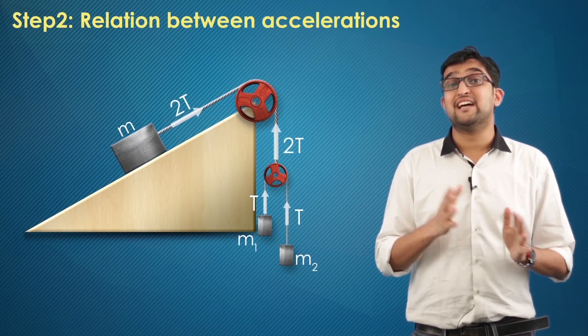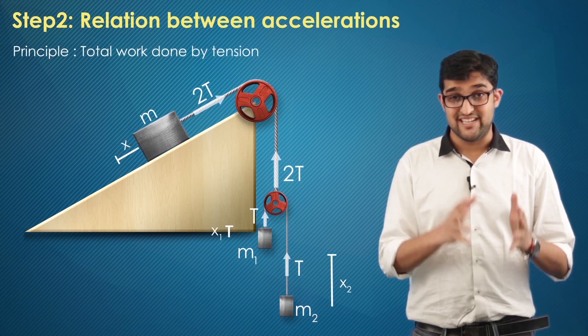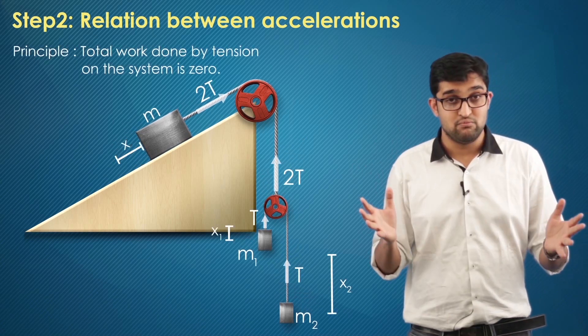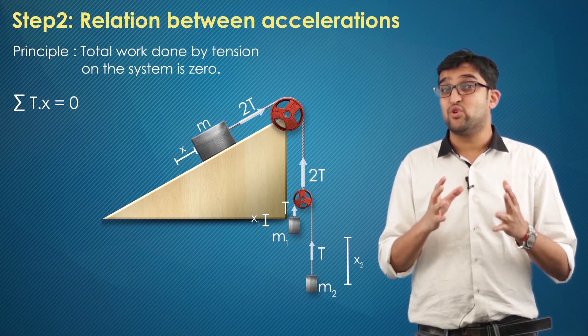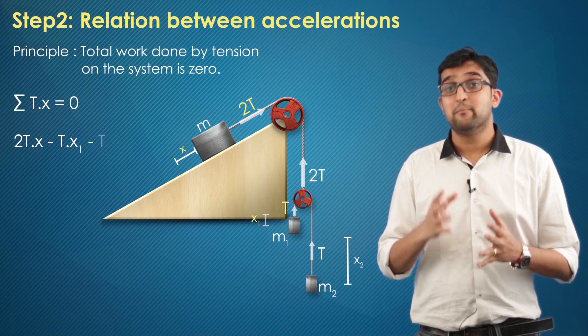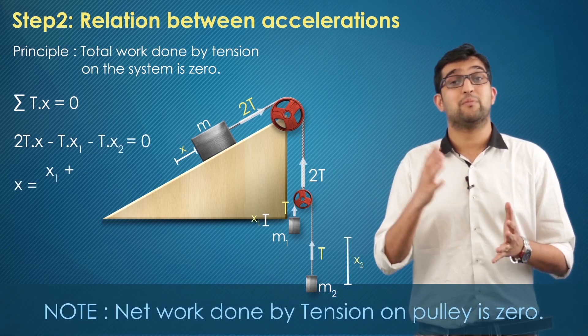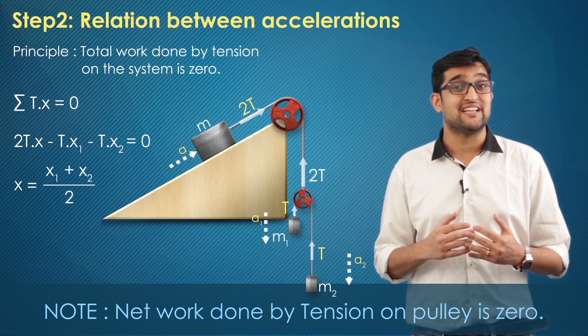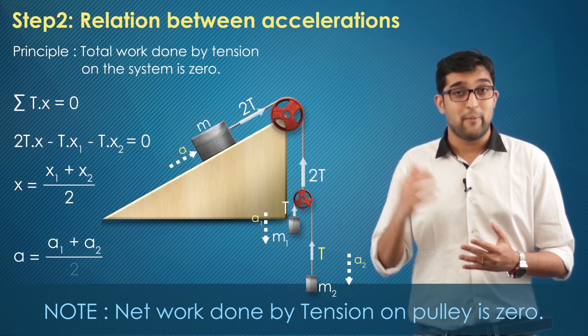Now instead of using the length constraint expression, we'll be using a principle that the total work done by tension on this system is zero. That is, summation T dot X equal to zero. Applying this to our system, we get 2T dot X minus T dot X1 minus T dot X2 equal to zero. Solving you will get X equals (X1 plus X2) by 2, and differentiating it twice you get acceleration a equals (a1 plus a2) by 2.